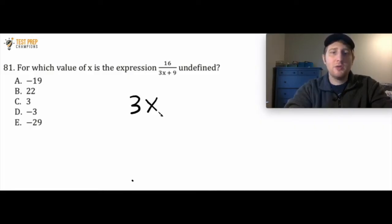So all you want to do is just take everything in the denominator of the fraction. Denominator is just everything in the lower part of the fraction, so this 3x plus 9, and I'm going to set this equal to 0, and I'm going to solve this equation for x.